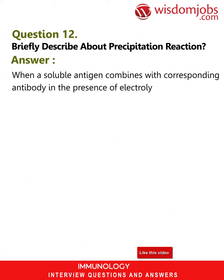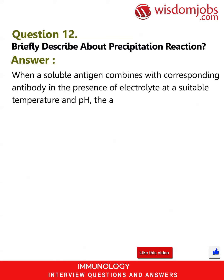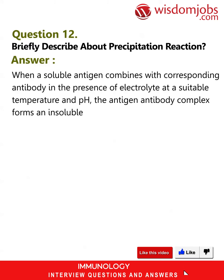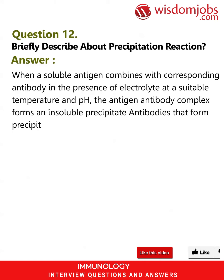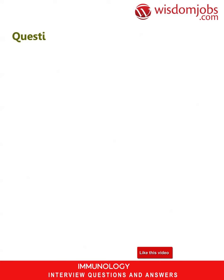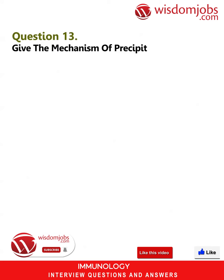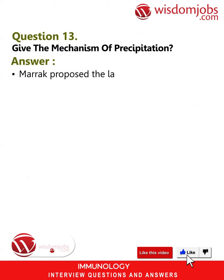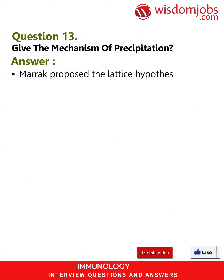Question 12: Briefly describe the precipitation reaction. Answer: When a soluble antigen combines with the corresponding antibody in the presence of electrolyte at a suitable temperature and pH, the antigen-antibody complex forms an insoluble precipitate. Antibodies that form precipitate are called precipitins.